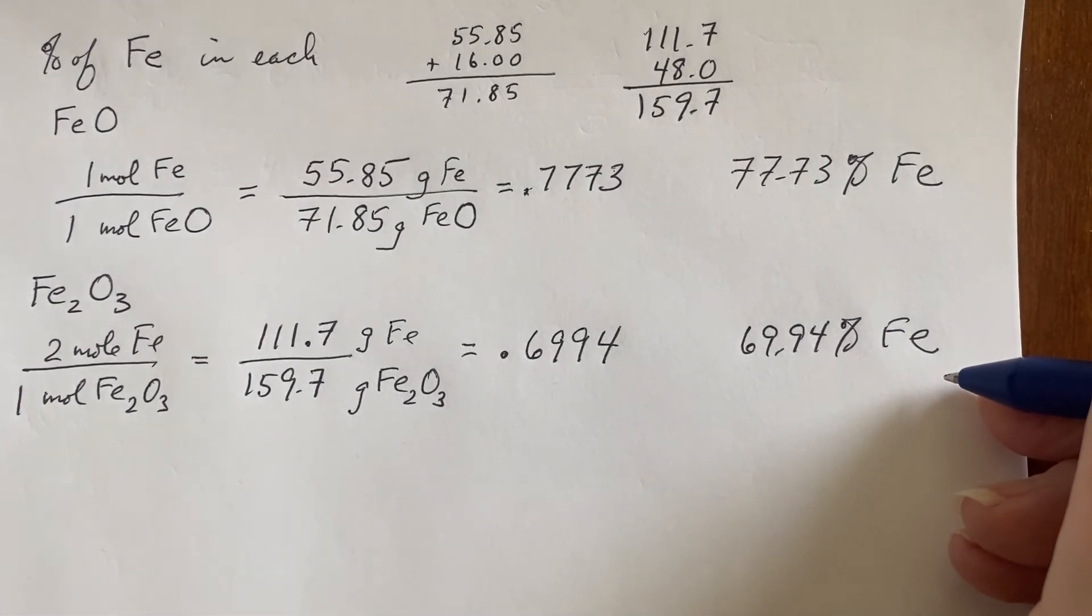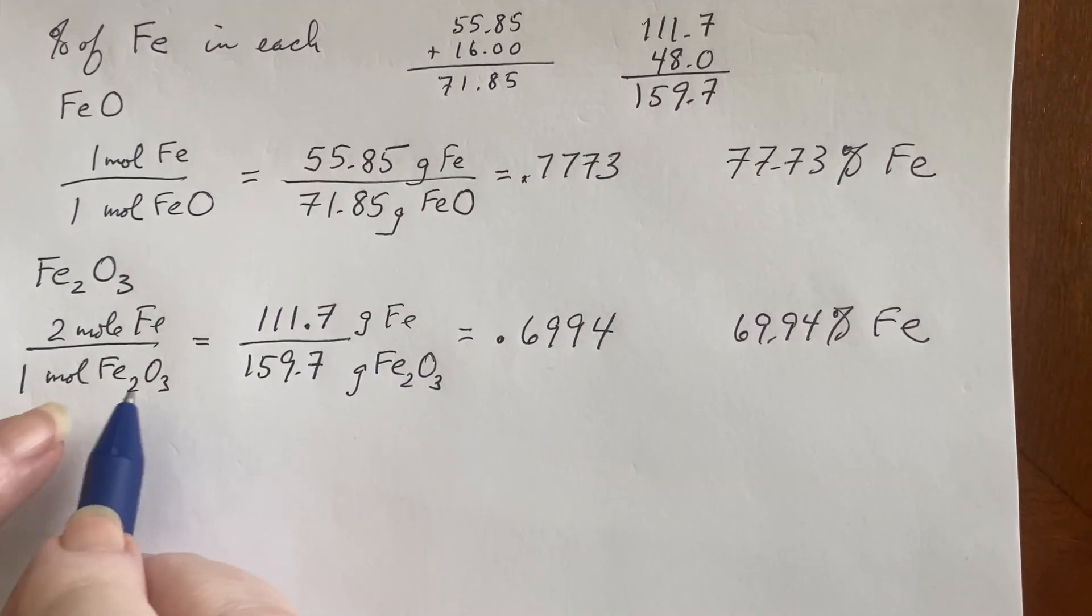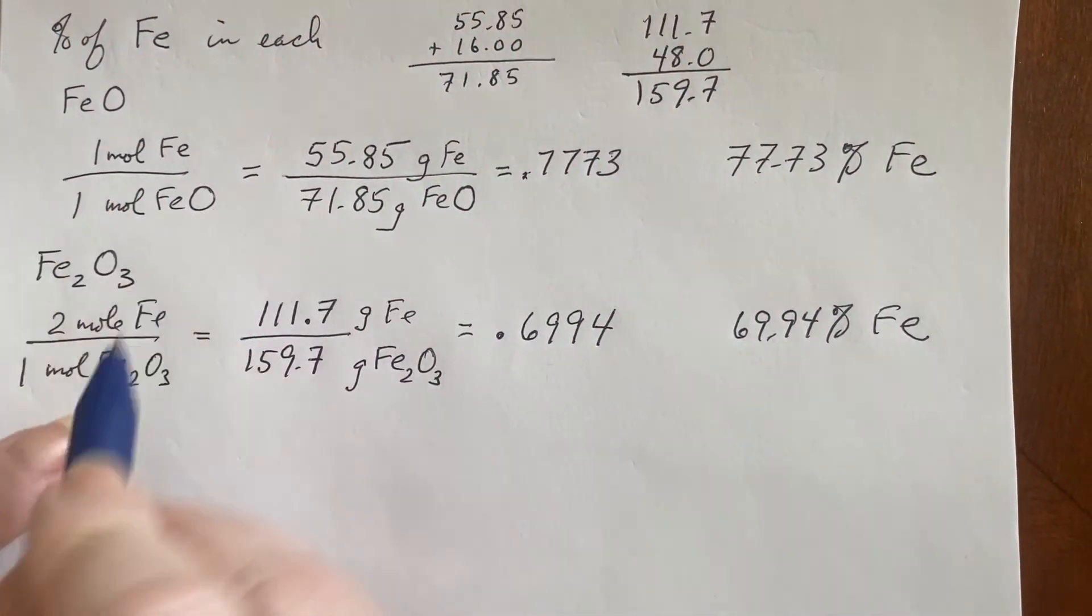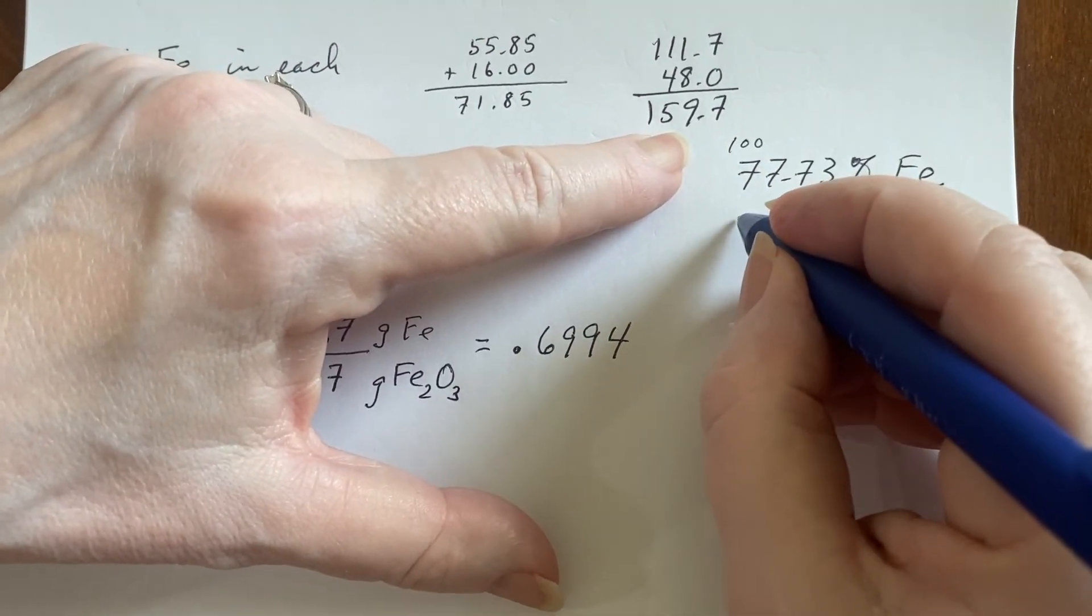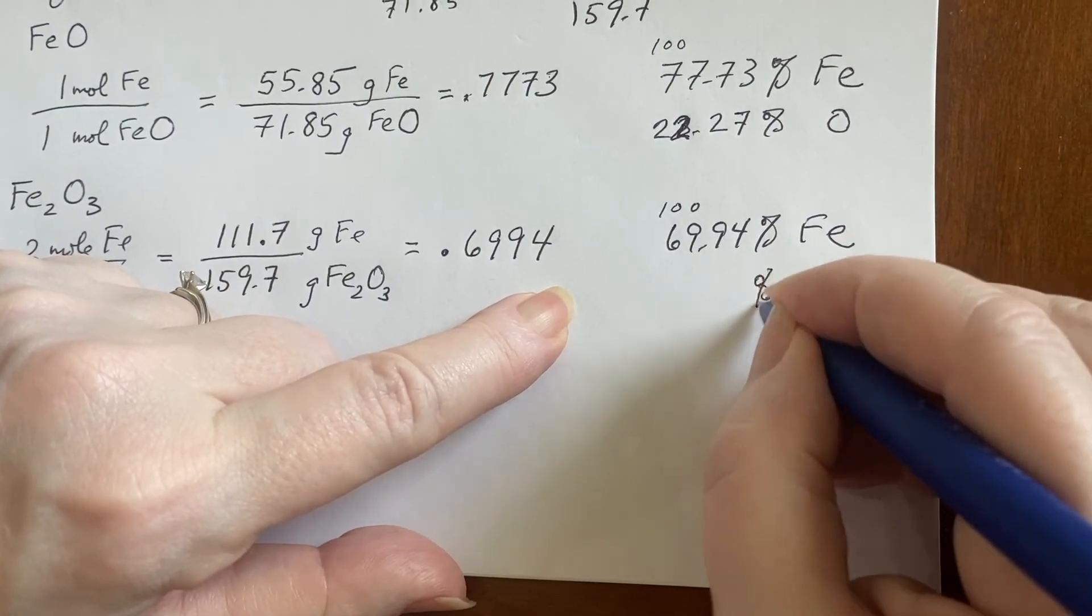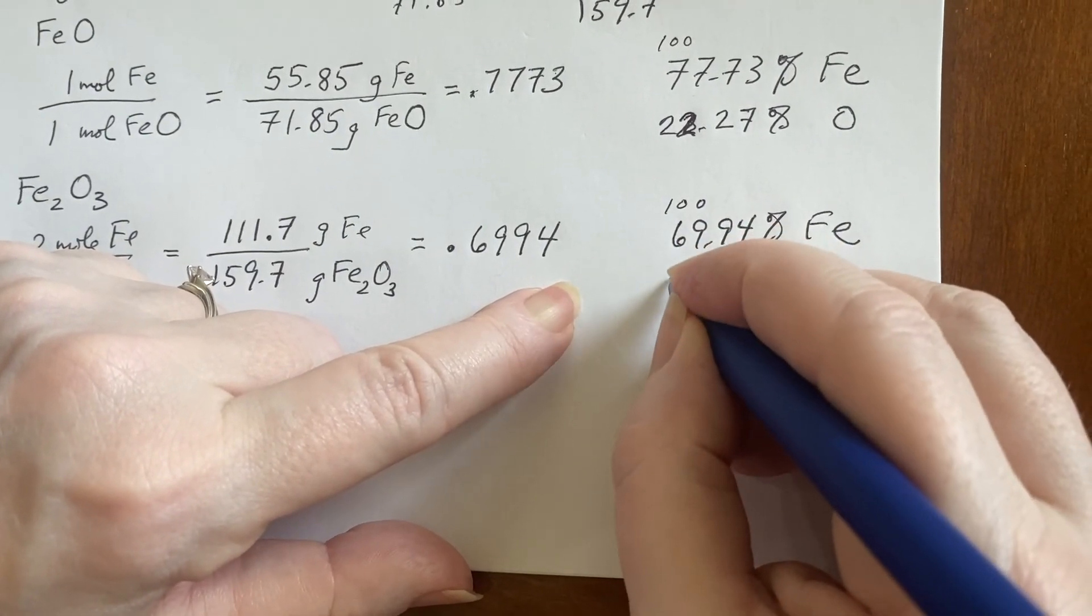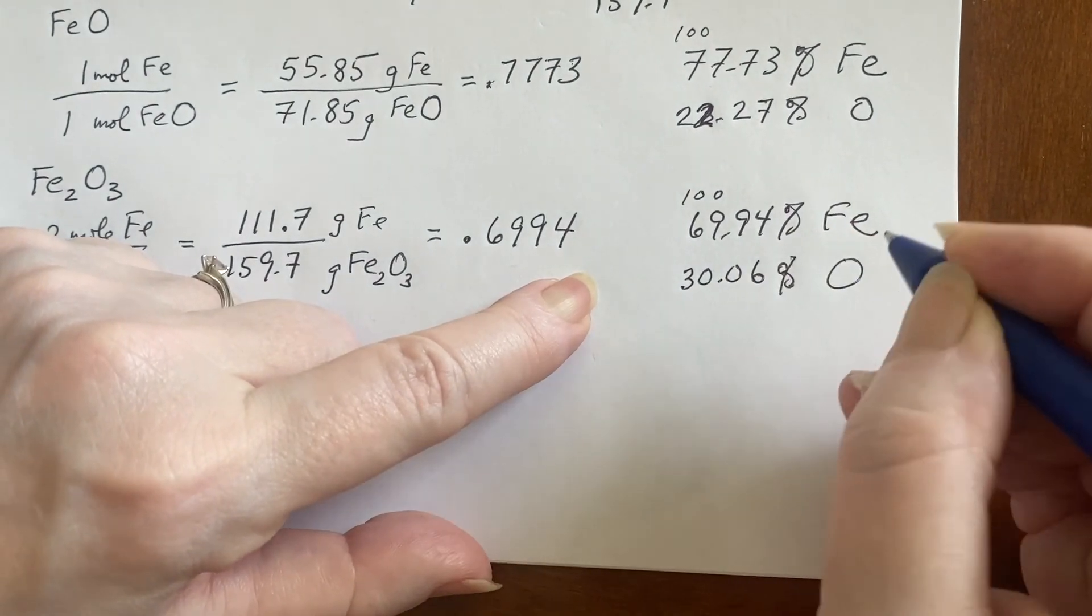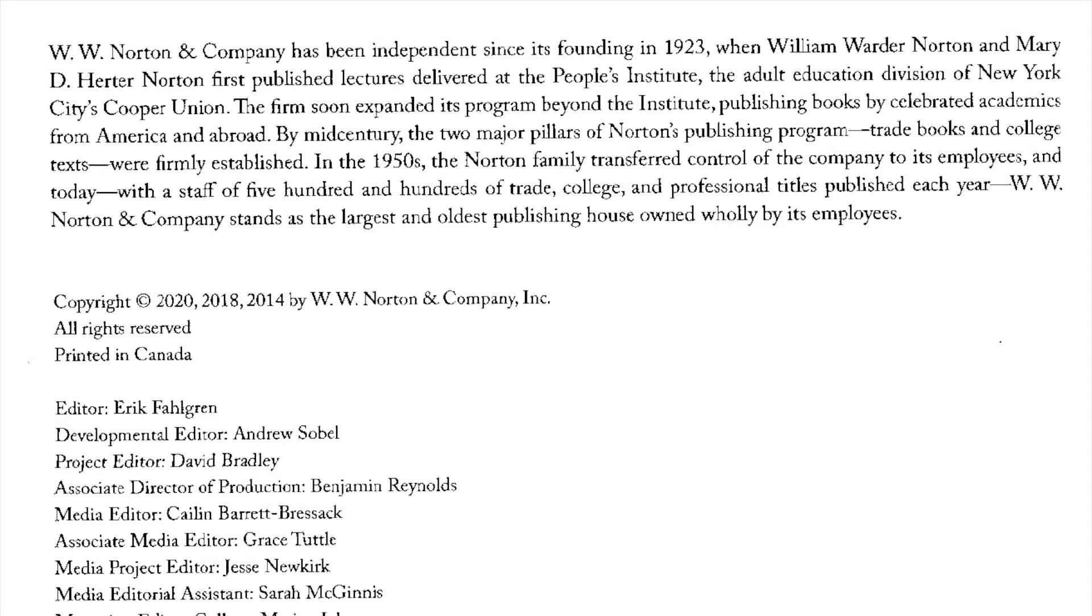Now, the other thing that you can do is you can work out how much is oxygen. Once again, in both of these samples, there's only two things, iron and oxygen. So you could just subtract from 100 and come up with the oxygen. There's the oxygen. And if I wanted the oxygen here, again, subtract from 100. We'll see you next time.